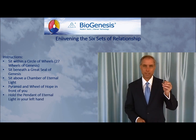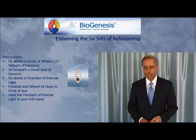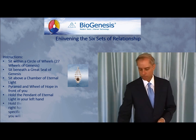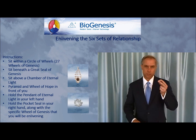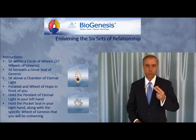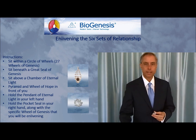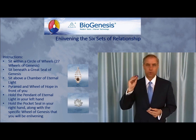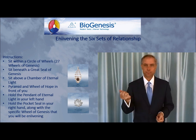If you have a chamber of eternal light, it is beneficial to be seated above it. You will have a pyramid and a wheel of hope in front of you — this is what you would normally have for the creating practice. You will take your pendant of eternal light and hold it in your left hand. Then you will have a pocket seal to hold along with any wheel that you are enlivening in your right hand.